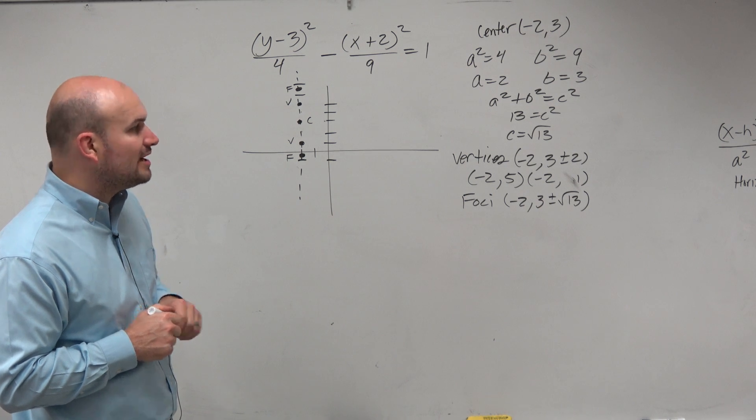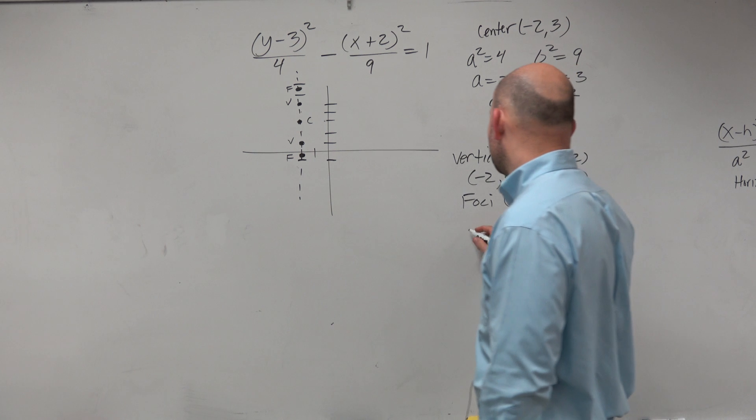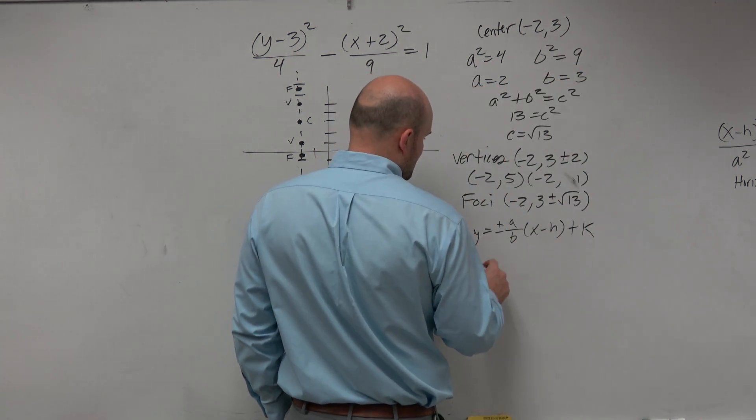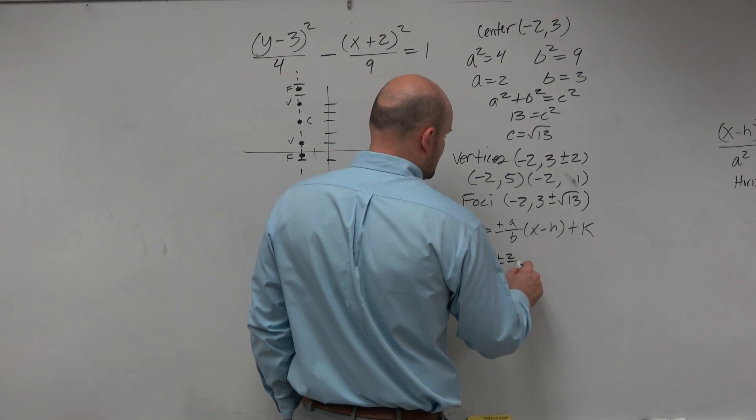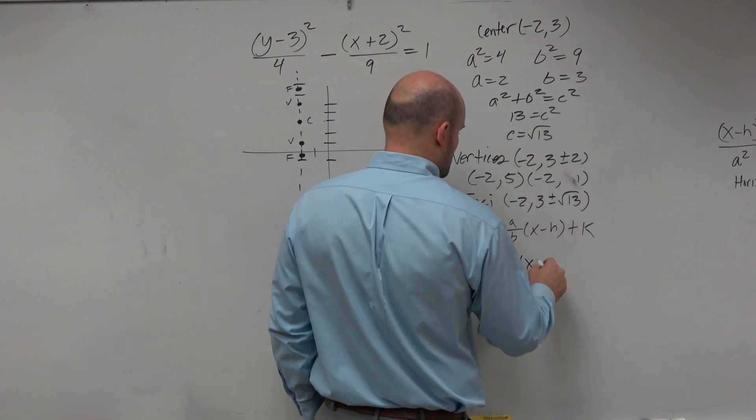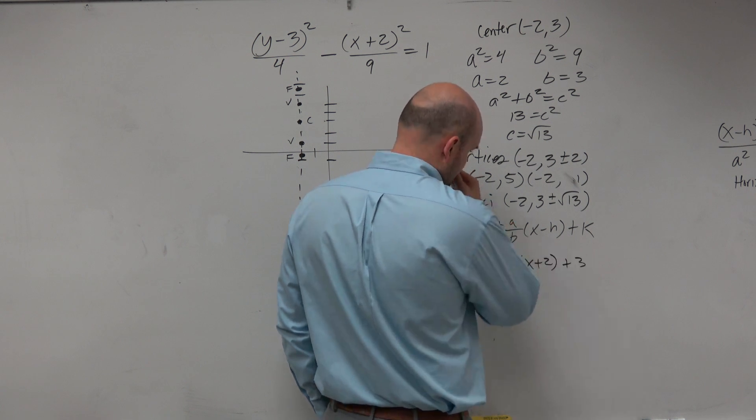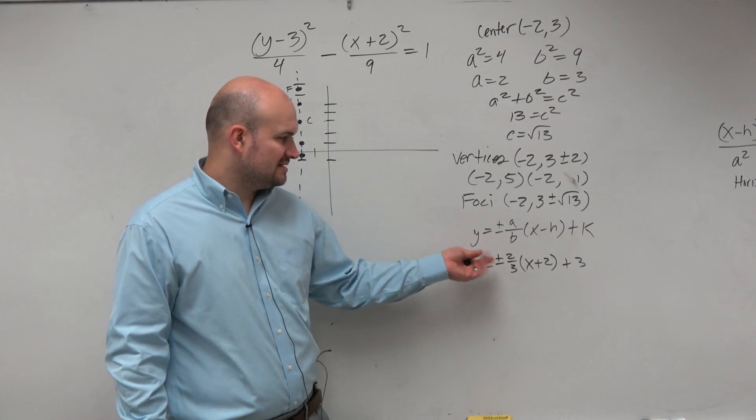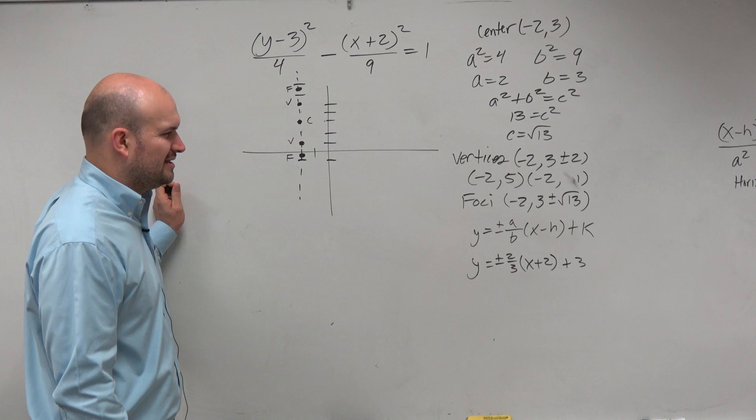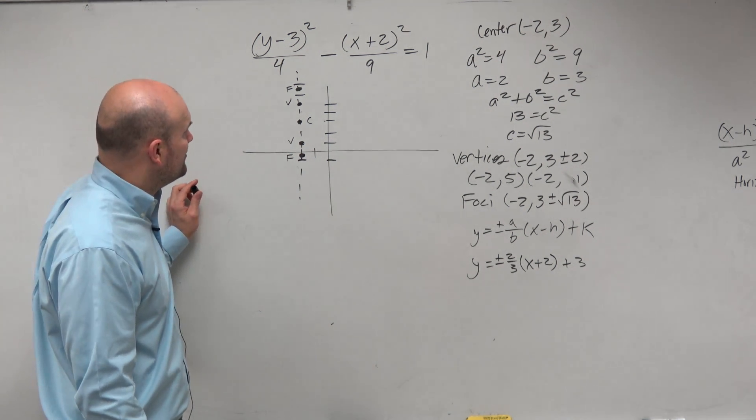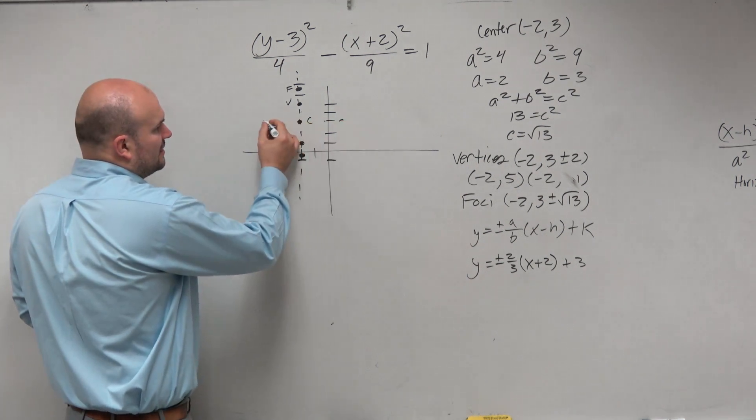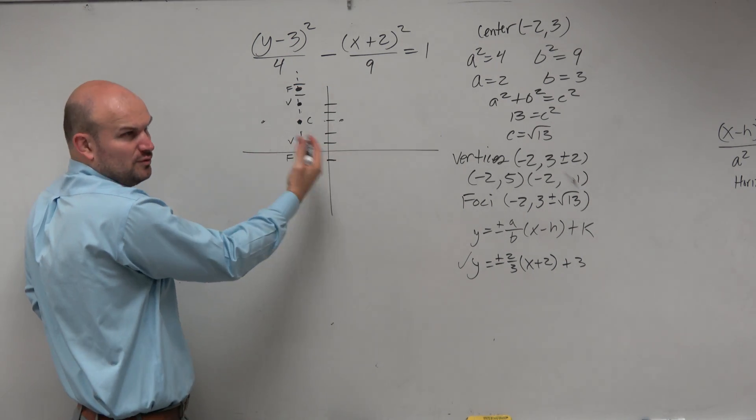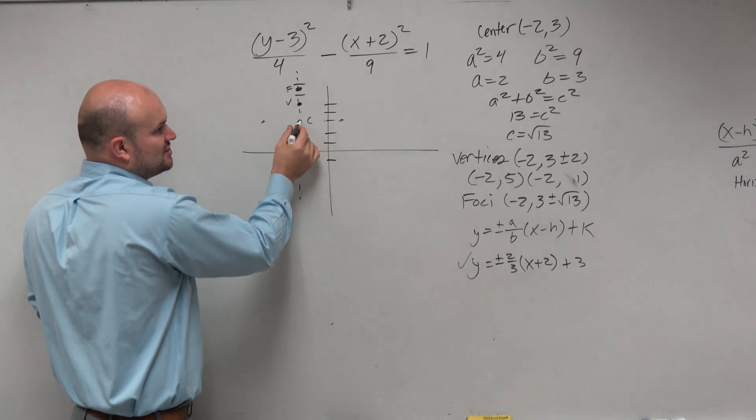And then I'm not going to find the co-vertices, but we want to find the asymptotes. Since this is a vertical transverse axis, my equation is y equals plus or minus a over b times x minus h plus k. Well, guys, if we look at this, y equals a over b, so that's going to be plus or minus 2 thirds times x plus 2 plus 3. Now, I could simplify this into standard form and be a little bit easier to graph. However, if you guys look at the math for this one, it's still not going to be like the most easiest graph. But you guys at least should understand that it's a line. And again, usually what I like to do is just kind of identify the co-vertices and just kind of create my graph. But let's just go and sketch the graph rather than trying to focus on graphing the asymptotes.